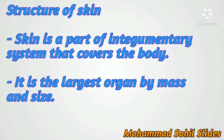So first of all, what is skin? Skin is the part of the integumentary system that covers the body. It is the largest organ by mass and size, also known as the cutaneous membrane. It covers the external surface of the body, having an area of about 2 square meters in adults, weighing 4.5 to 5 kg. Its thickness ranges from about 0.5 mm on the eyelid to 4.0 mm on the heels.